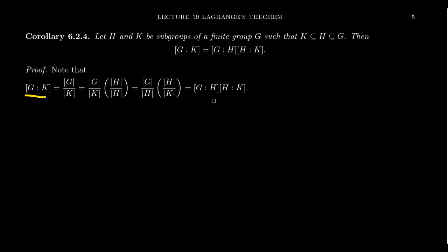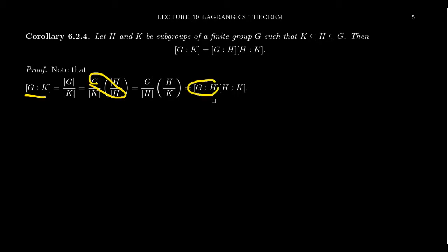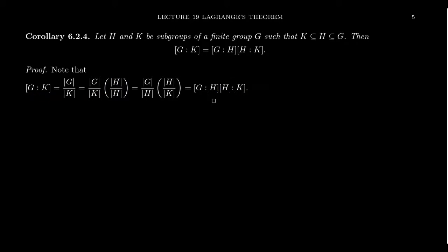By Lagrange's Theorem, the index of K inside of G equals the order of G divided by the order of K. As this is just a fraction, we multiply by the strategic number one: the order of H over the order of H. We can then factor to get (|G|/|H|) × (|H|/|K|), which is the index of H in G times the index of K in H. The factorization follows immediately from Lagrange's Theorem.